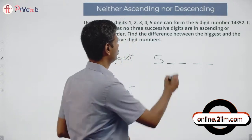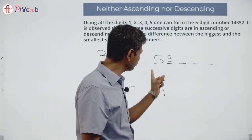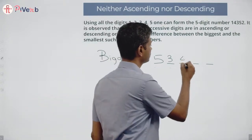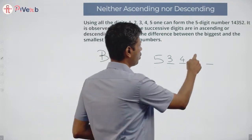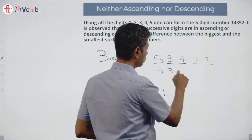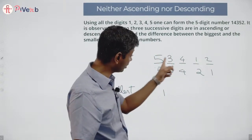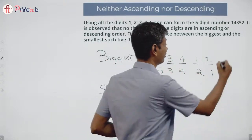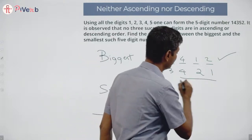The next best is 5-3. But if I put 5-3-2 or 5-3-1, that becomes descending order. So the next digit must be 4, giving us 5-3-4. With 1 and 2 remaining, I try 53412: checking all groups — not ascending or descending — this works! But 53421 fails because 4-2-1 is descending.